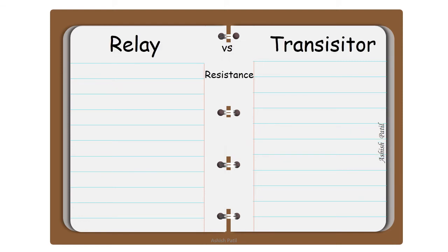Resistance. In relay there is infinite open resistance. Transistor has leakage which can affect attached electronic circuits.